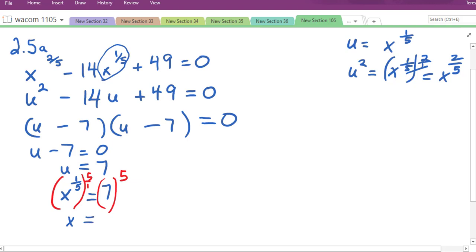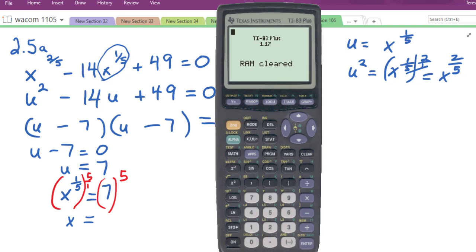So we'll do that on our calculator, 7 to the 5th. And there is our answer, 16, 8, 0, 7.